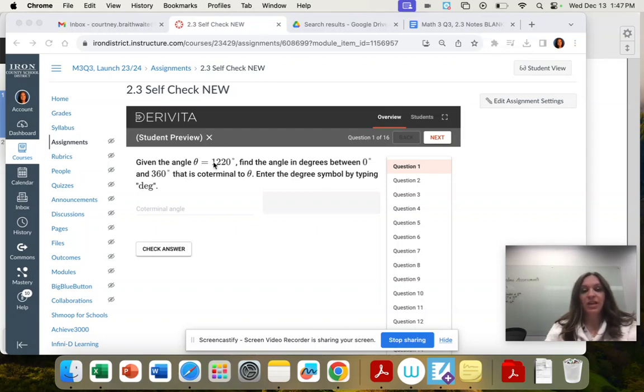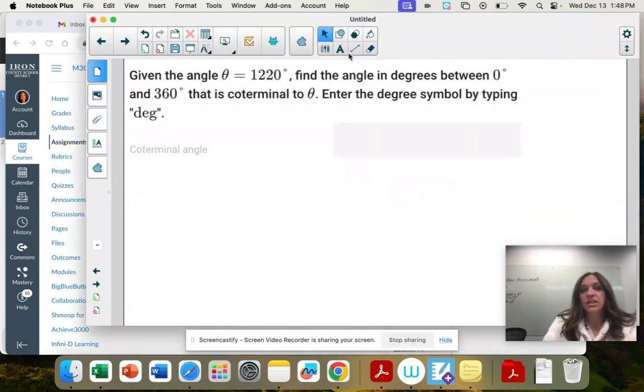Question one: given the angle theta is 1,220 degrees, find the angle in degrees between zero and 360 that is coterminal to theta. So coterminal means it's the same.